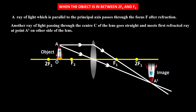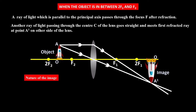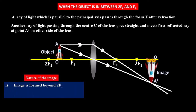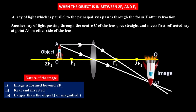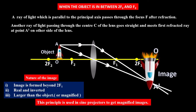The image of the object is formed beyond 2f1. The image is real and inverted, and the size of the image is larger than the object — a magnified image is formed.